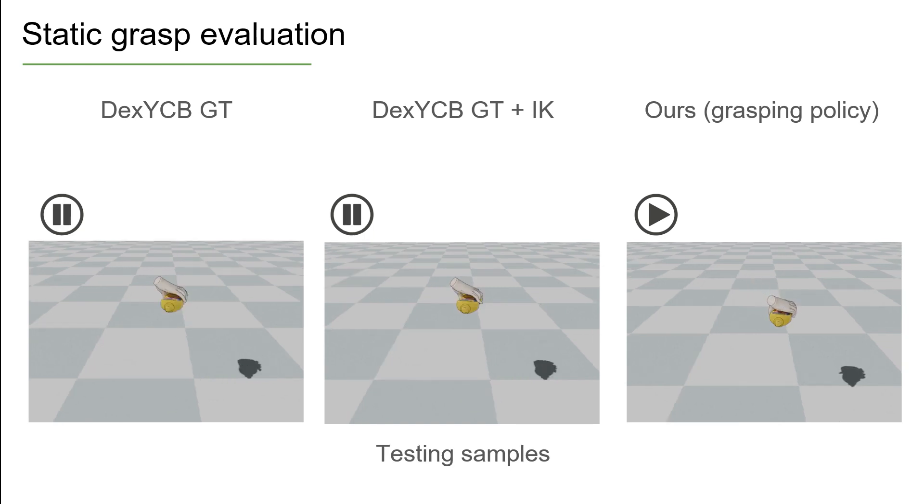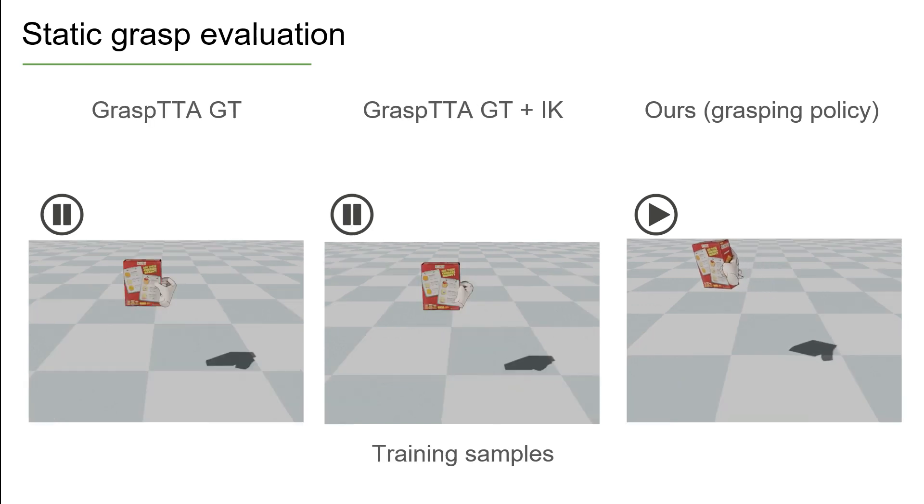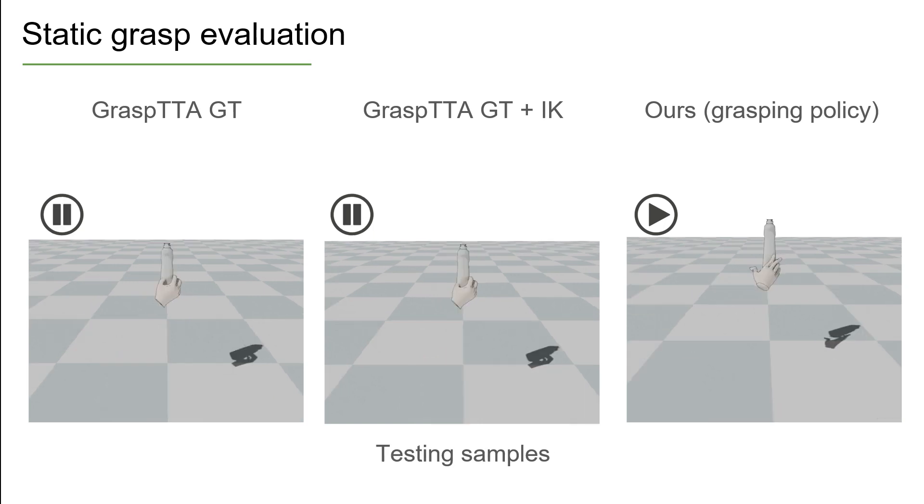Our method also learns to achieve stable grasps from previously unseen grasp inputs and can generalize to unseen objects. Furthermore, we use the grasps generated by the state of the art GraspTTA method as input to our model. Our approach yields improved grasps on seen and unseen samples from this method.